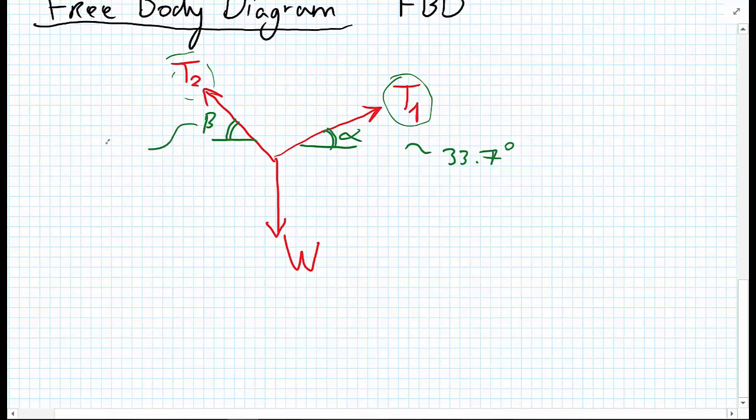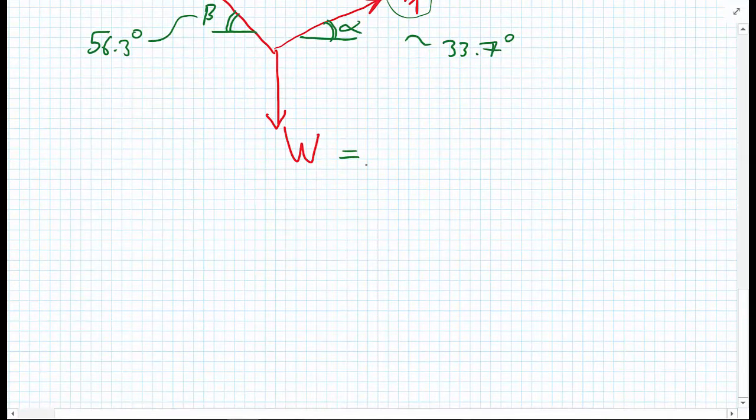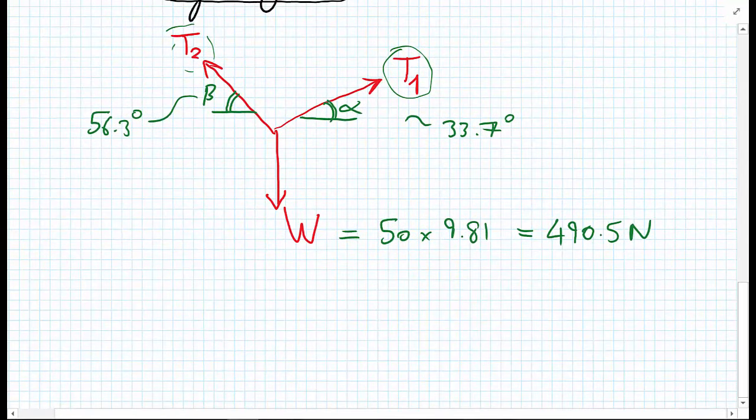We're not going to go through the calculation for that, we're just going to state that the angle alpha equals 33.7 degrees and the angle beta is equal to 56.3 degrees. And the other thing that we said we knew was the known force, so the weight was equal to the 50 kilograms, and we're going to multiply by the acceleration due to gravity, 9.81, which gives us a total of 490.5 newtons. So the unknowns in the system being T1 and T2.